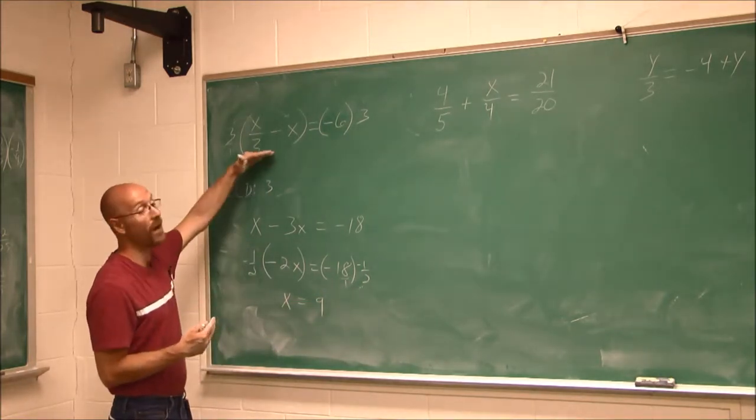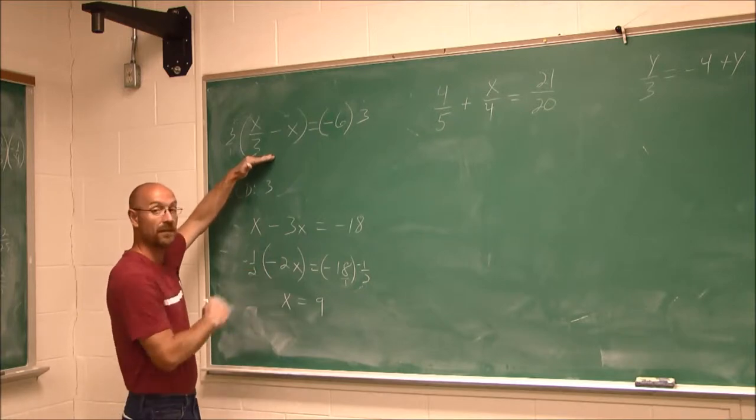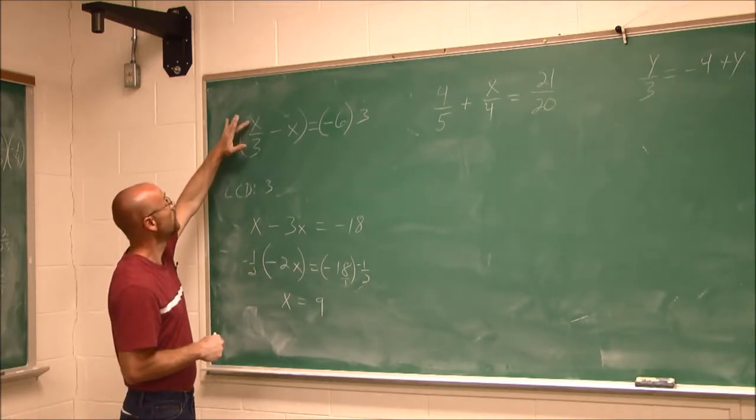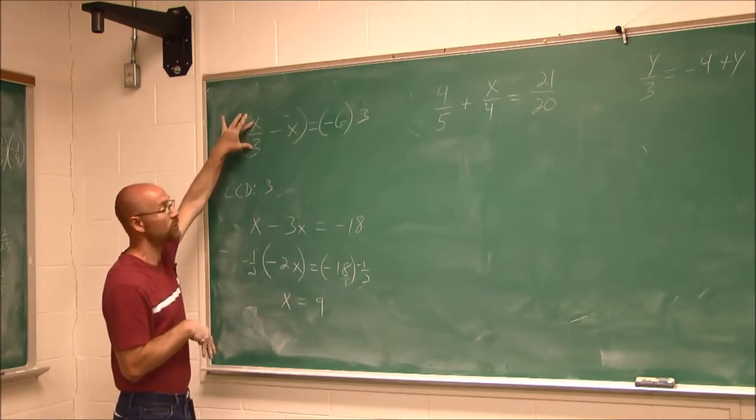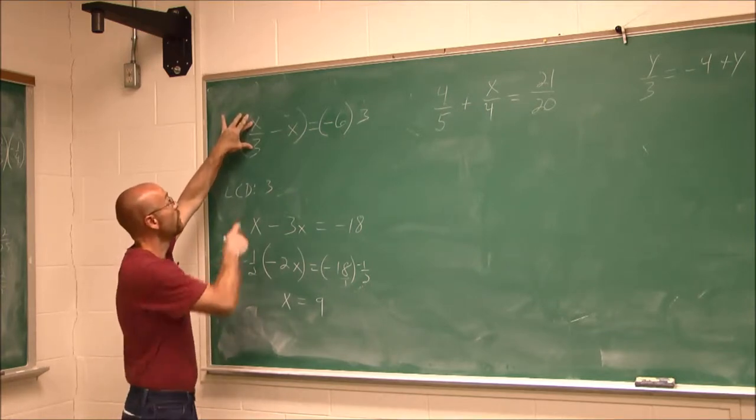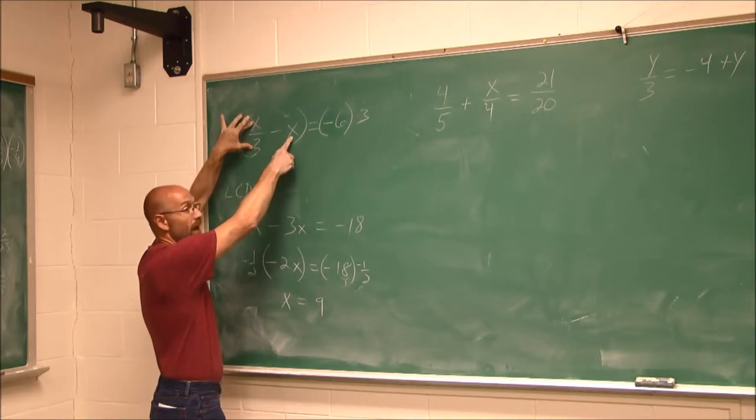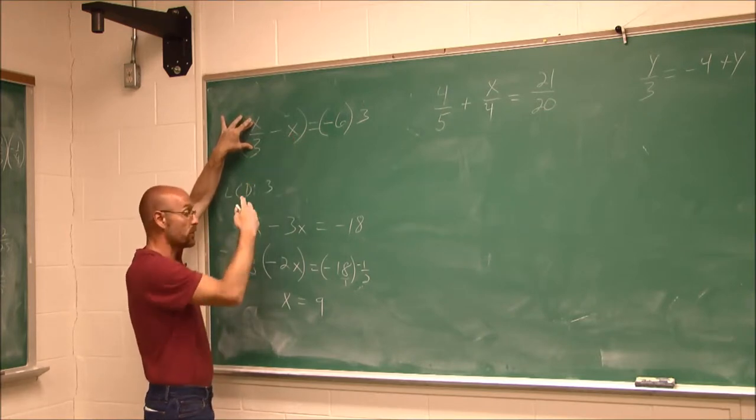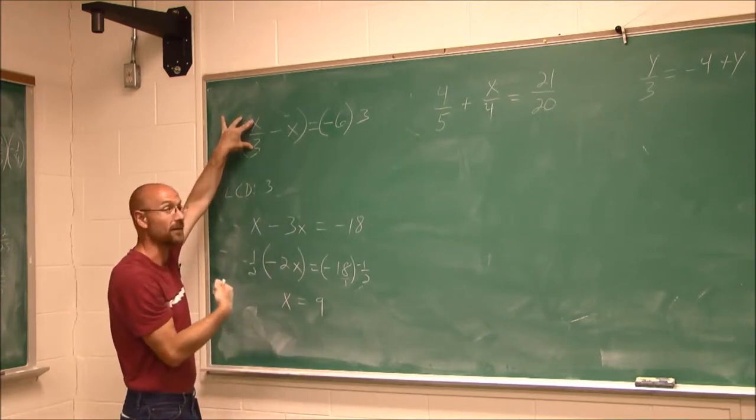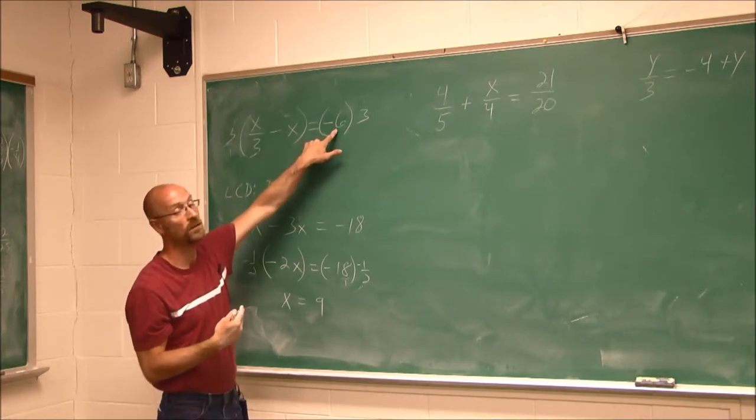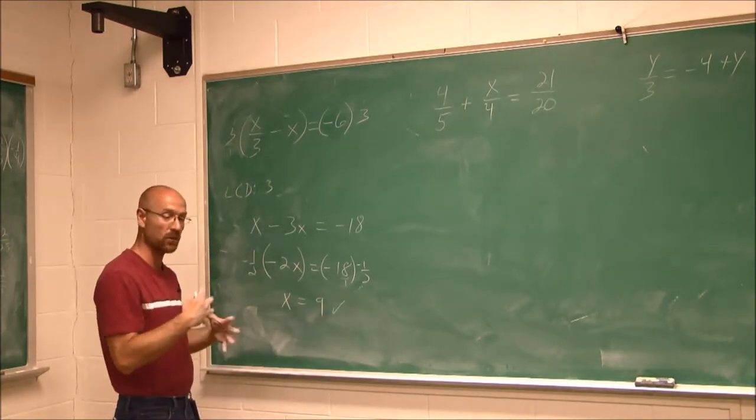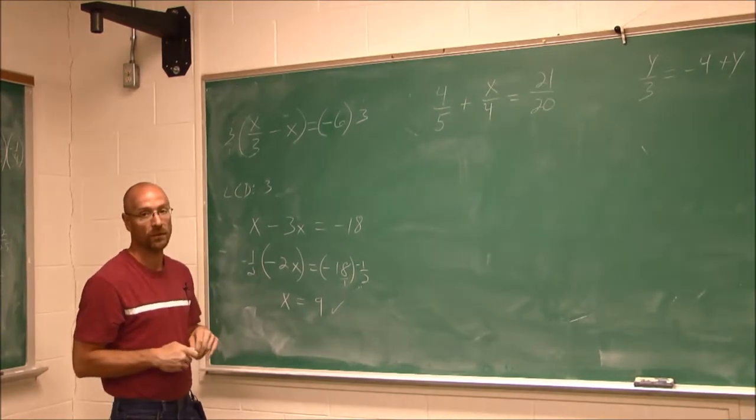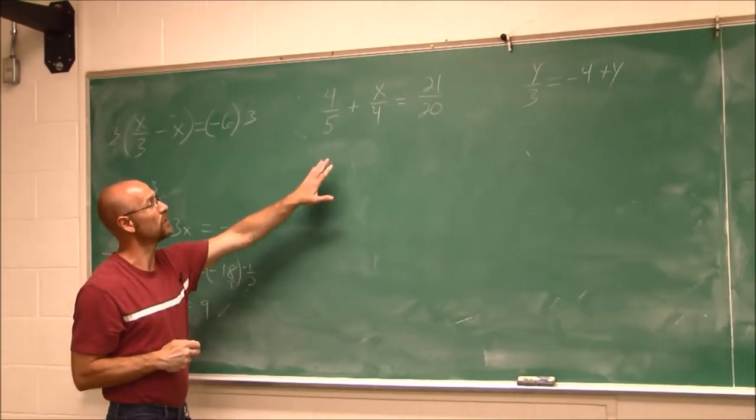How do I know I'm right? Go back and plug it in and see if it makes a true statement. So if I put 9 in for here, and I'm going to skip the work, 9 over 3 is 3. 3 minus 9, different signs find their difference, 3 minus 9 is a negative 6. This was equal to negative 6. So I did check my work. You might want to show those steps until you're very comfortable with doing these problems.